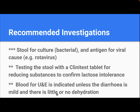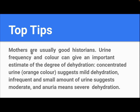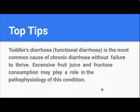Blood for electrolytes is not indicated unless the diarrhea is mild and there is little or no dehydration. Top tips: mothers are usually good historians. Urine frequency and color can give an important estimate of the degree of dehydration. Concentrated orange-colored urine suggests mild dehydration; infrequent and small amounts of urine suggest moderate dehydration; and no urine means severe dehydration.